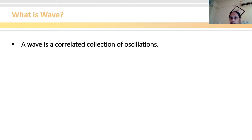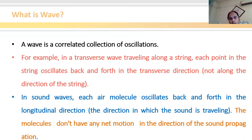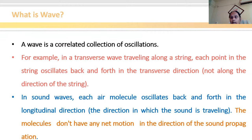So first I need to start with what is a wave. It is a correlated collection of oscillations. For example, a transverse wave traveling along a string — each point in the string oscillates back and forth in the transverse direction, but not along the direction of the string. If you consider a sound wave, each air molecule oscillates back and forth in the longitudinal direction, that is the direction in which the sound is traveling.